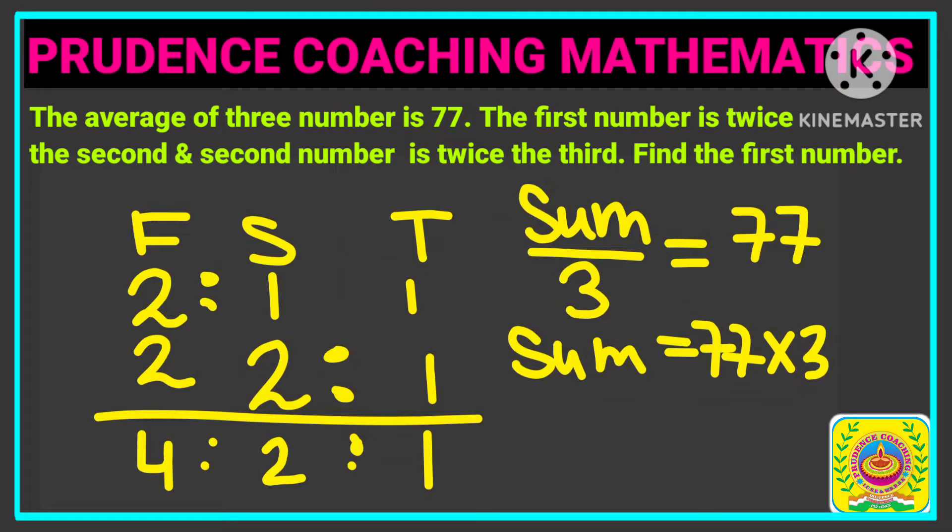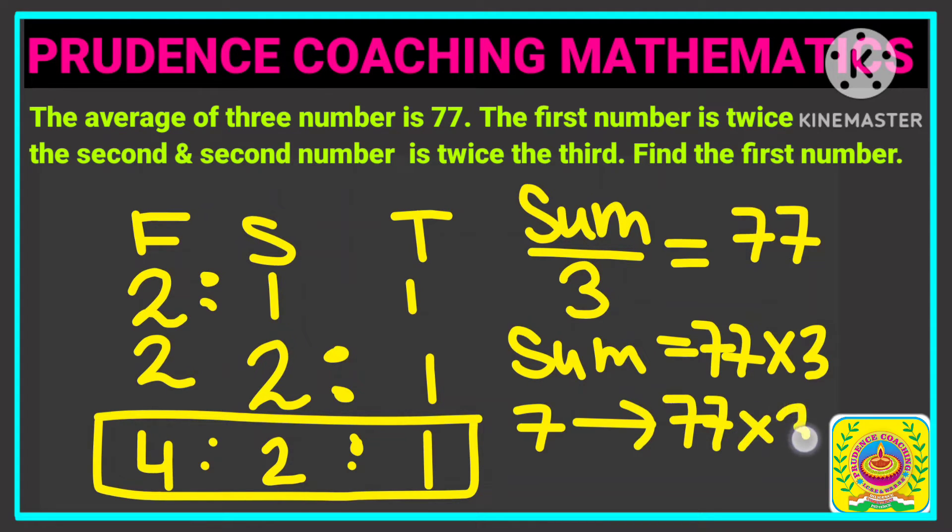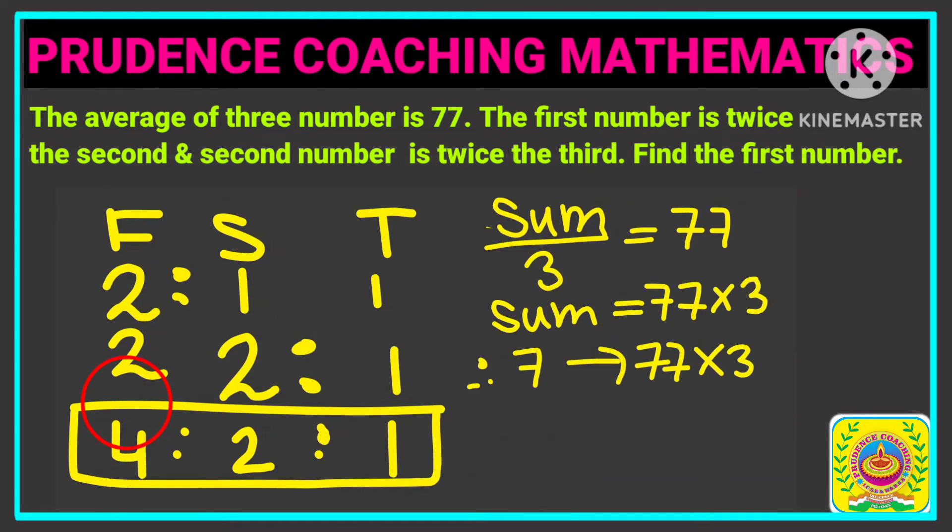Now according to this ratio, if we add all these ratio values, then you are getting 4 plus 2 is 6 plus 1 is 7. So here according to ratio, the sum is 7. So we can write 7 is equal to 77 into 3. And we are asked to find out the value of 1 unit. So from here we can find out the value of 1 unit. So 1 unit will be 77 multiplied by 3 divided by 7.